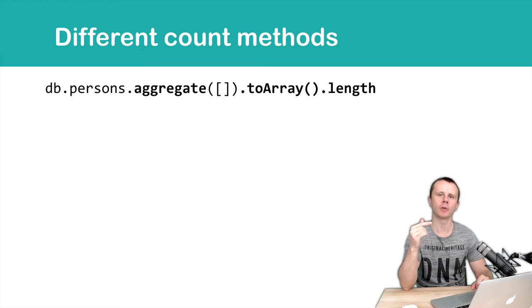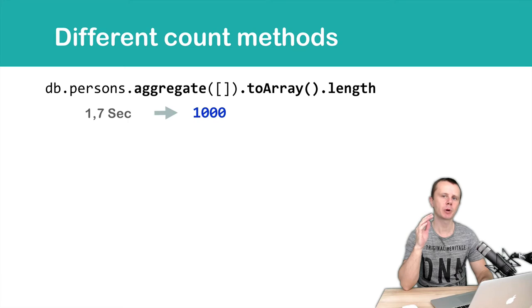We invoke this method and then we can use its property in JavaScript. Length is a property of each array, and it means that in this case this long command will return us the number of documents in the cursor. This operation will take about 1.7 seconds and will return 1000.